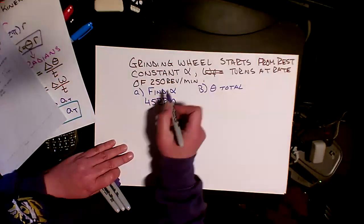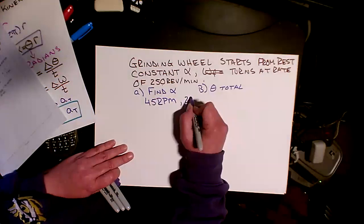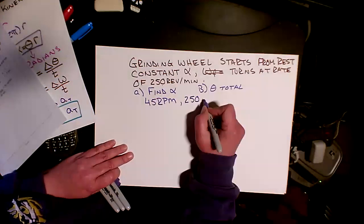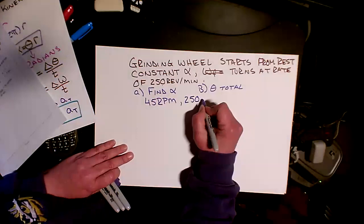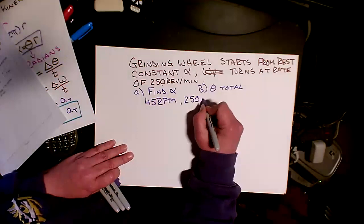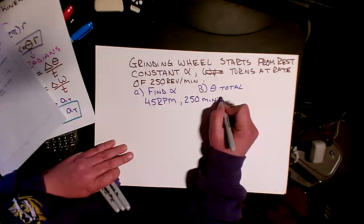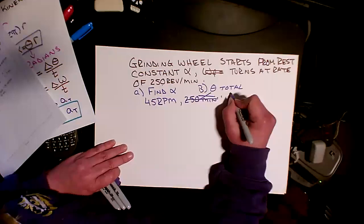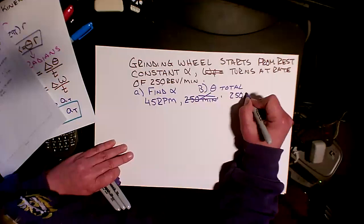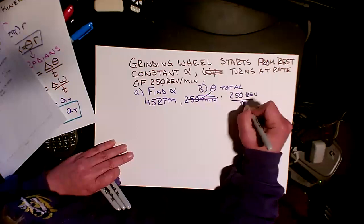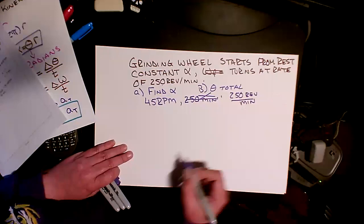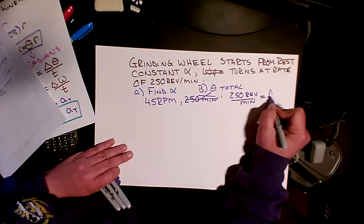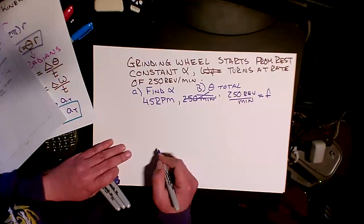So this value here, this 250 is a frequency. 250, we can think of it as rotations per minute to the negative one, or I can just write it as 250 revolutions per minute. So this is a frequency.